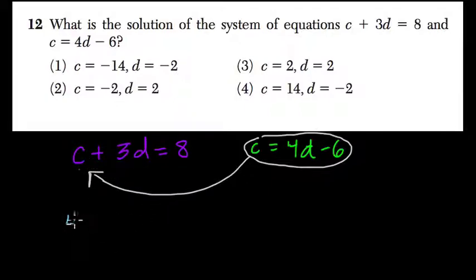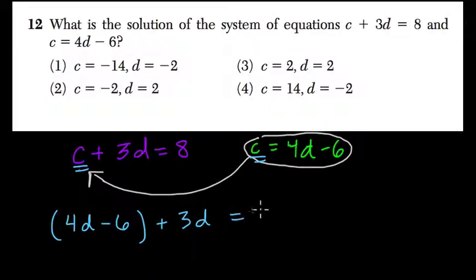So what I get is 4d minus 6, right? That's me just plugging this in to here, plus what? Well, the equation says take the c value and add 3d, right? And that equals 8.